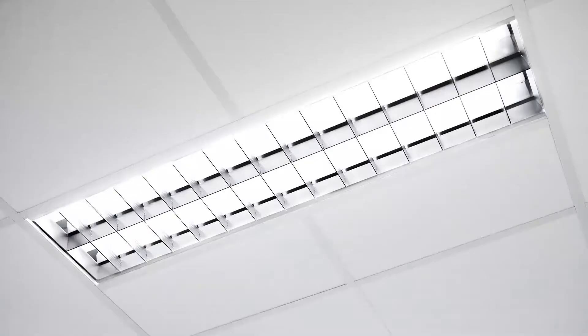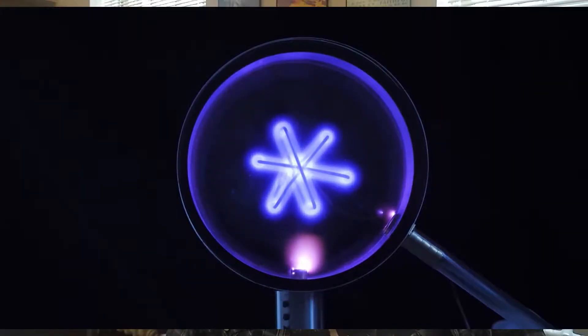Plasma exists here on Earth as many things that we see and use in our daily lives, such as lightning, CFL and fluorescent lights, fires, and then of course nuclear stuff.